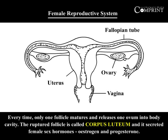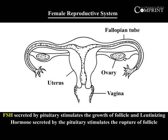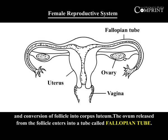The ruptured follicle is called corpus luteum and it secretes female sex hormones oestrogen and progesterone. Hormones secreted by the pituitary stimulate the rupture of the follicle and conversion of the follicle into corpus luteum.